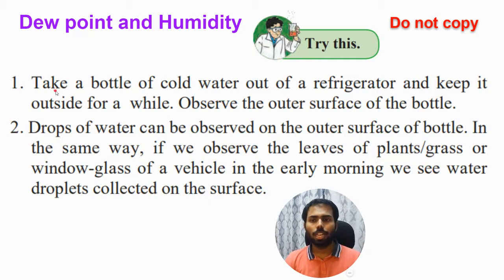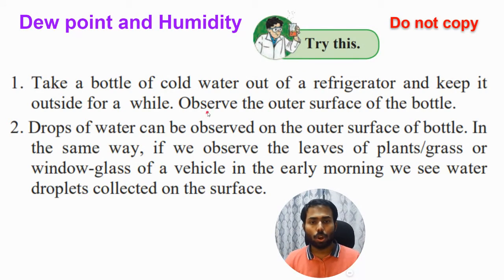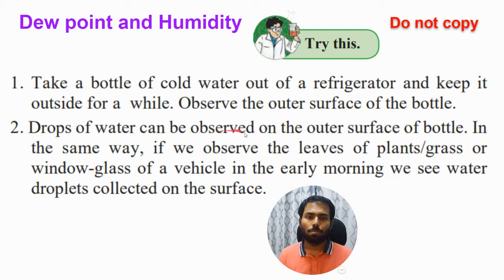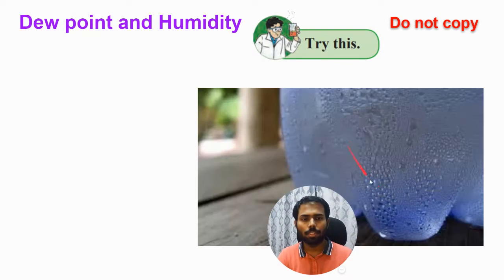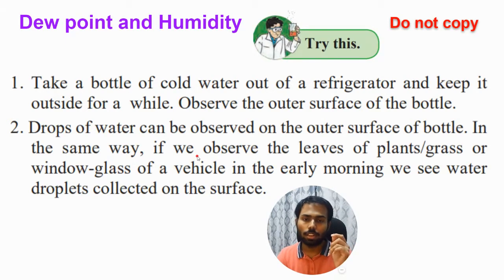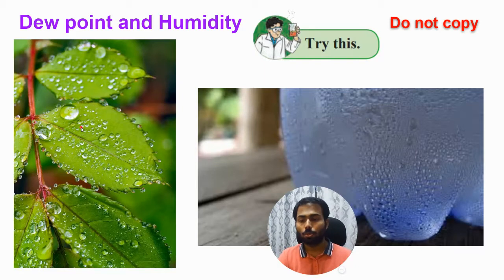There is a 'Try This' activity in your textbook. Take a bottle of cold water out of the refrigerator and keep it outside for a while. Observe the outer surface of the bottle — you will see small droplets forming on it. Similarly, if you observe the leaves of plants, grass, and window glass of a vehicle in early morning, you see water droplets collected on the surface. Those small droplets on leaves in the early morning are called dew, and that is where the term dew point comes from — it is the temperature at which dew starts forming.